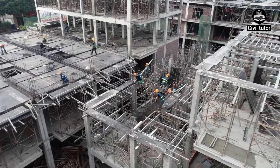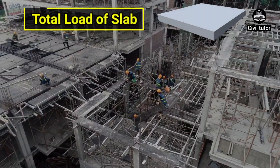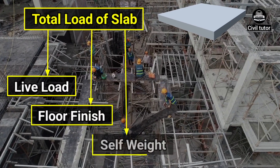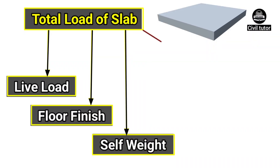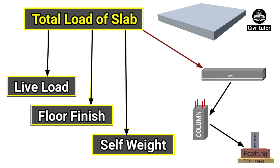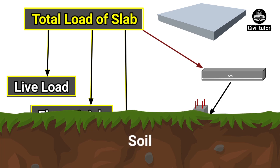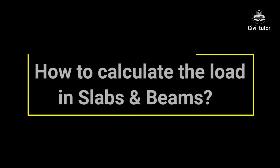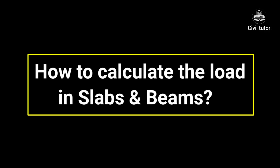For any framed structure, the total load of a slab includes the live load, floor finishing load, and the self weight of the slab. This load is transferred to the beams which provide support to the slab, and from the beams the load is transferred to the supporting columns, then from columns to the footings and finally to the soil on which the whole structure is constructed. In this lecture, I am going to discuss how to calculate the load in slabs and beams.